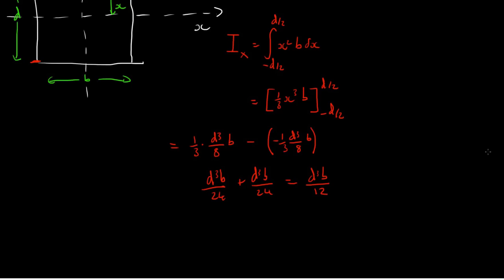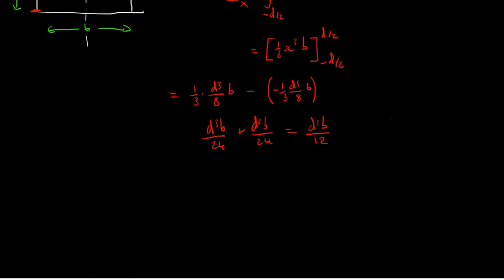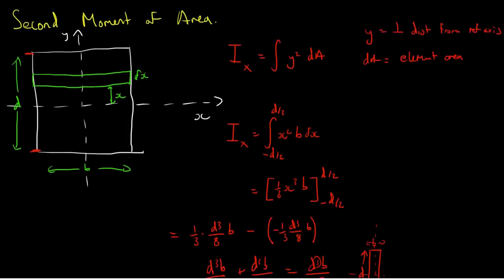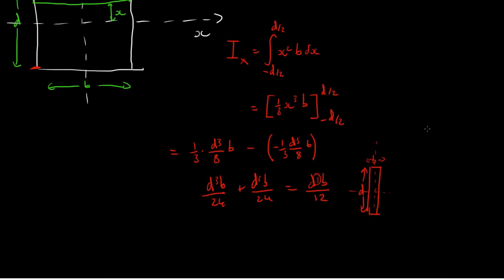Now does this make sense to us? Well, if we take a long slender member, it makes sense that d is the cubed term. Because it's going to be far easier to bend this about this axis, vertically through it, than it is about this axis. You can imagine trying to bend a floorboard through the centre of it. It's much easier to do it along this direction than this direction. That's because d is the cubed term here.